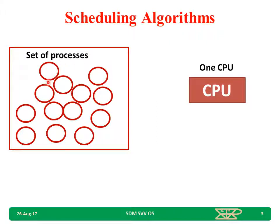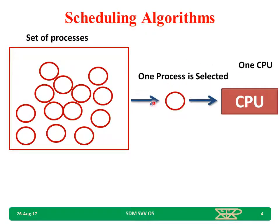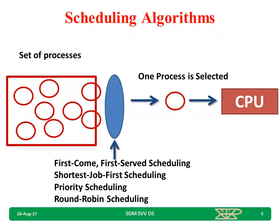I have a set of processes but only one CPU. This one CPU cannot execute all the processes at a time. Hence, there is a need of selection — I have to pick only one process among these processes and allocate it to the CPU. I use different algorithms like first come first serve, shortest job first, priority scheduling, round robin, and among many processes, one will be selected and given to the CPU for execution.